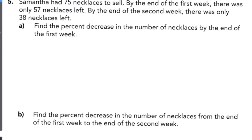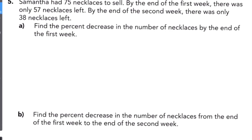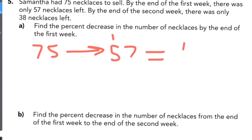The next problem says Samantha had 75 necklaces to sell. By the end of the first week there were 57 left, and by the end of the second week there were 38 left. Find the percent decrease by the end of the first week. She started with 75 and ended with 57, so subtracting gives you 18 — she went down by 18.